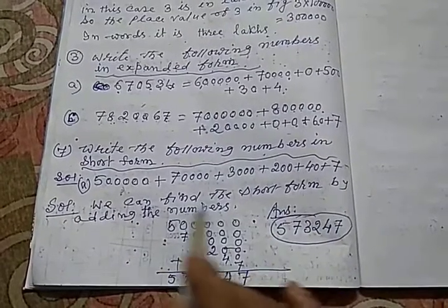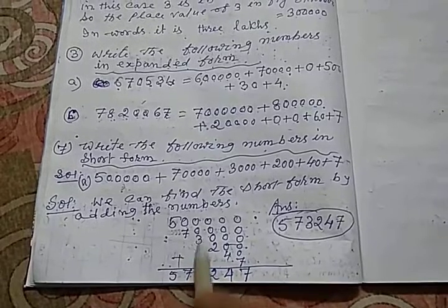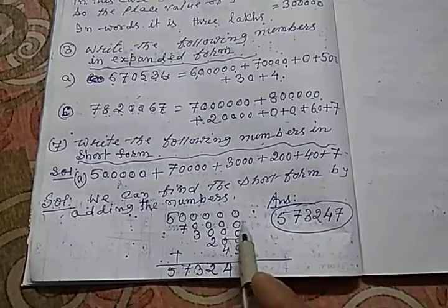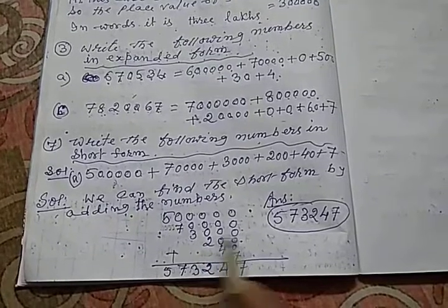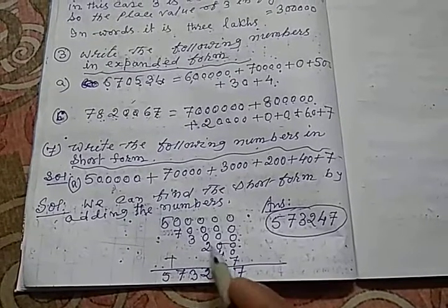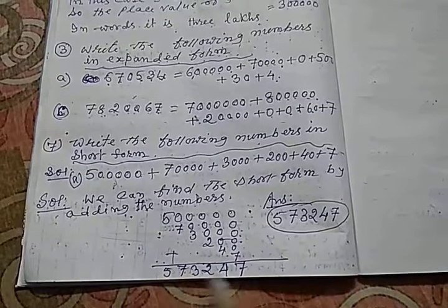Aap isko easy tarike se kar paoge. Aap pehle add kar lo. Add karne ka time, ek cheez aapko dhyan rakhna padega. Aap always digit ko right side se left side mein daalte rahoge. Right side se left side mein daalte rahoge. Taki aapka digit ke niche, sahih digit ke niche, sahih digit aayega. After adding.